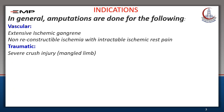In general, amputations are done for the following indications. The vascular indications include extensive ischemic gangrene. I'm going to give you examples with pictures. Some patients with ischemia have a non-reconstructible arterial tree. If those patients are having intractable ischemic rest pain, this is another vascular indication for amputation.